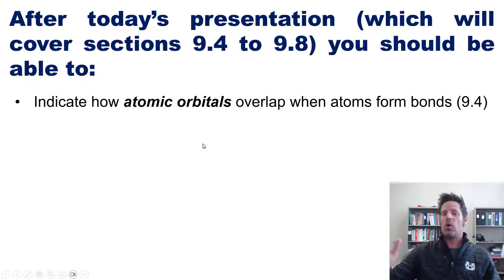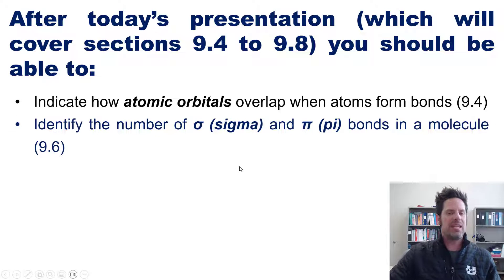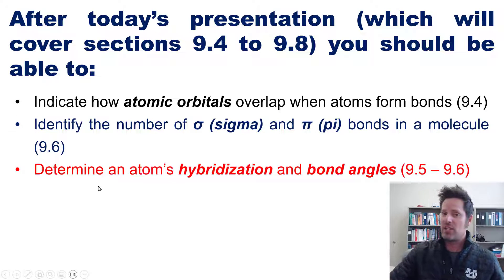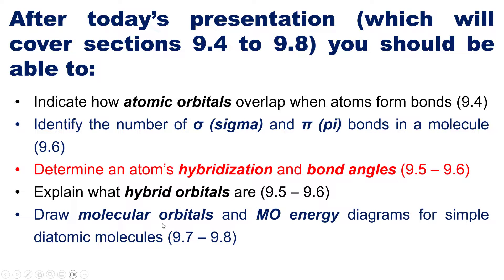Being able to indicate how atomic orbitals overlap when atoms form bonds, identify the number of sigma and pi bonds in a molecule, determine an atom's hybridization and its bond angles, explain what hybrid orbitals are, draw molecular orbitals and MO energy diagrams for simple diatomic molecules, and be able to calculate bond orders. So that's where we're going.